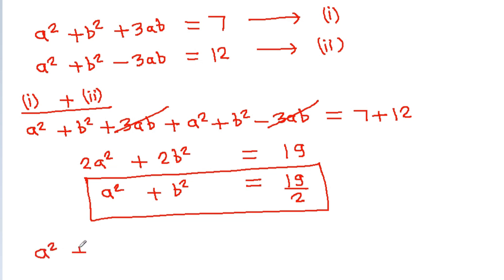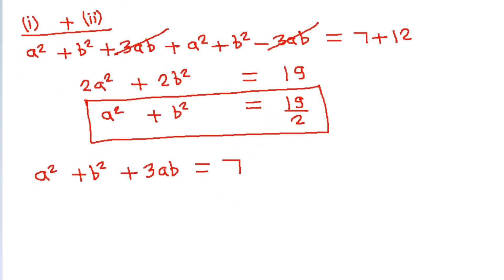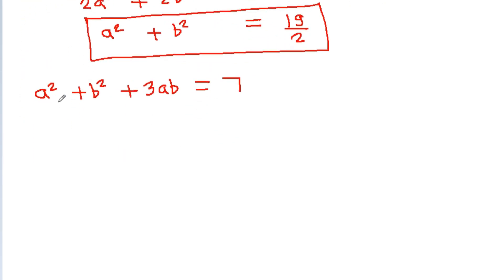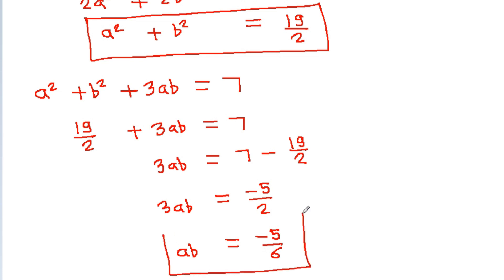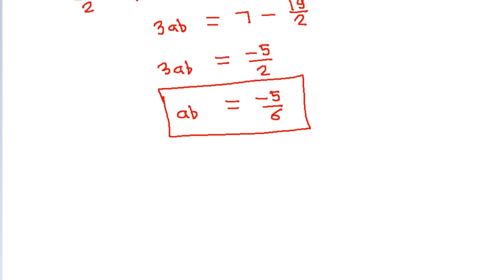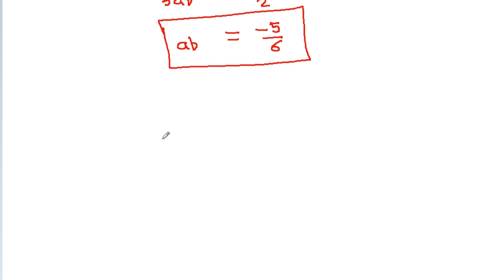From equation 1, a² + b² + 3ab = 7, so 3ab = 7 - 19/2 = (14 - 19)/2 = -5/2, and therefore ab = -5/6.